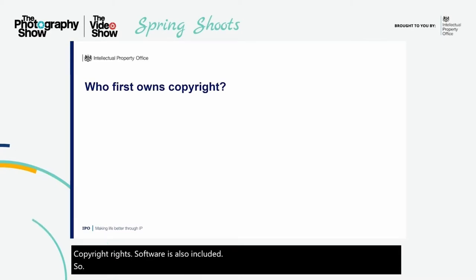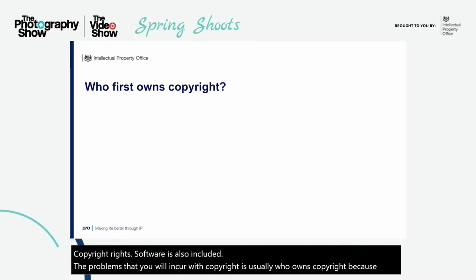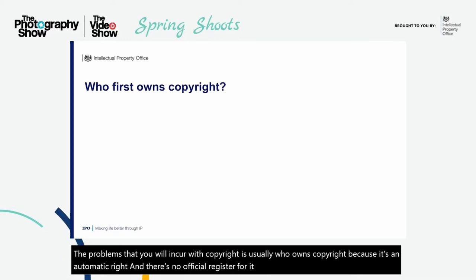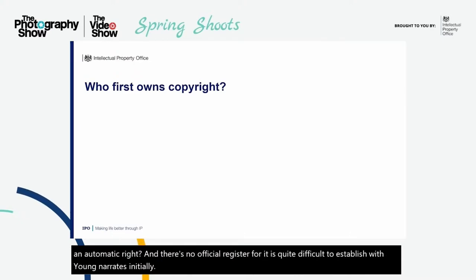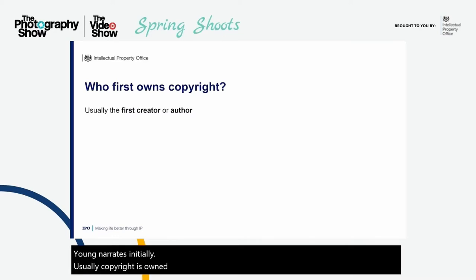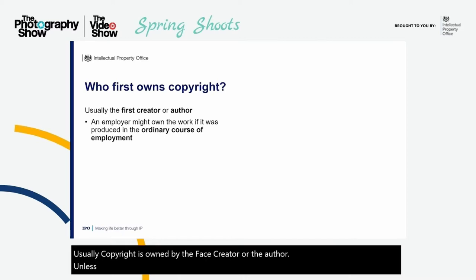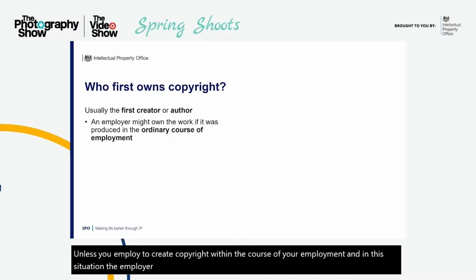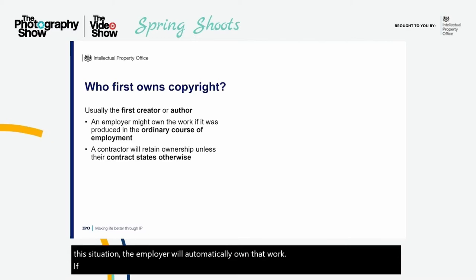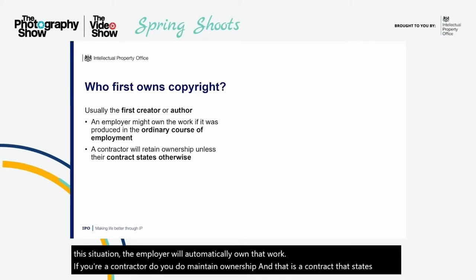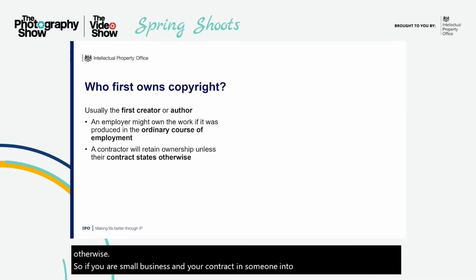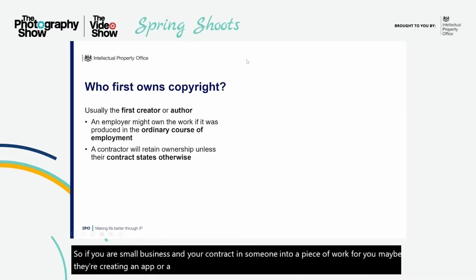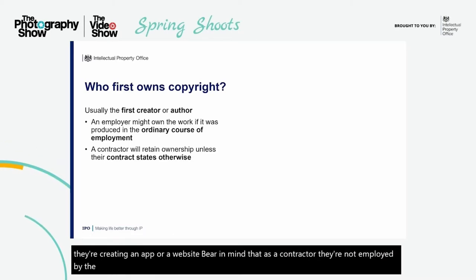The problems you will incur with copyright usually concern who owns it. Because it's an automatic right and there's no official register, it's quite difficult to establish who the owner is initially. Usually copyright is owned by the first creator or the author, unless you're employed to create copyright within the course of your employment — in that situation, the employer will automatically own that work. If you're a contractor, though, you do maintain ownership unless there's a contract that states otherwise. So if you're a small business contracting someone to create an app or a website, bear in mind that as a contractor they'll still maintain ownership over their copyright.